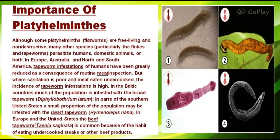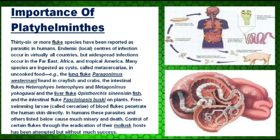In many countries much of the population is infected with the broad tapeworm. In parts of the southern United States, a small portion of the population may be infested. In Europe and the United States, the beef tapeworm is common due to the habit of eating undercooked steaks or other beef products. Thirty-six or more fluke species have been reported as parasitic in humans. Widespread infections occur in the Far East, Africa, and Tropical America. Many species are ingested as cysts called metacercariae in undercooked food. Free-swimming larvae of blood fluke penetrate human skin directly.